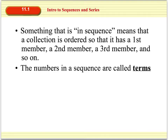When we talk about the phrase that something is in sequence, this means that we have some collection of data that is being ordered so that it has a first term or member, a second term or member, a third term or member, and so on. Each of the numbers in a sequence is what we call a term.